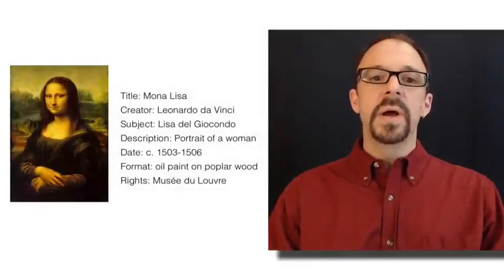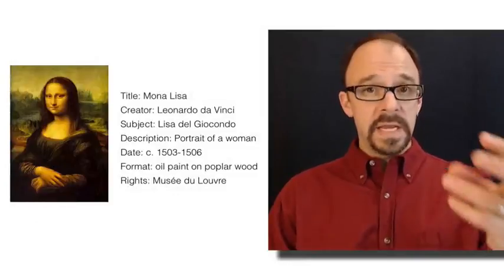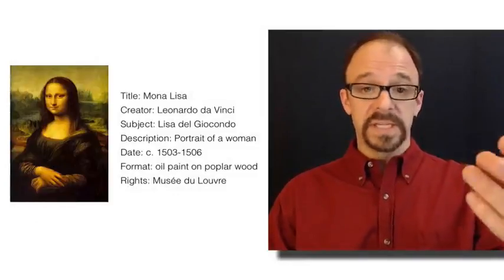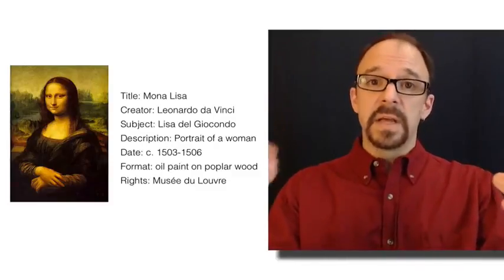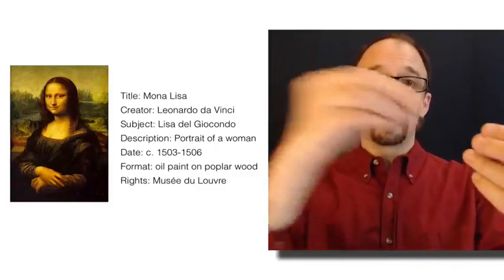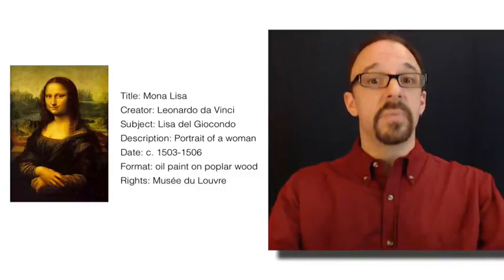Think back to our Mona Lisa example. We had the entity the Mona Lisa. We had the entity Leonardo da Vinci. And then we could make a statement, Leonardo da Vinci is the creator of the Mona Lisa. We had two entities and a relationship between them.